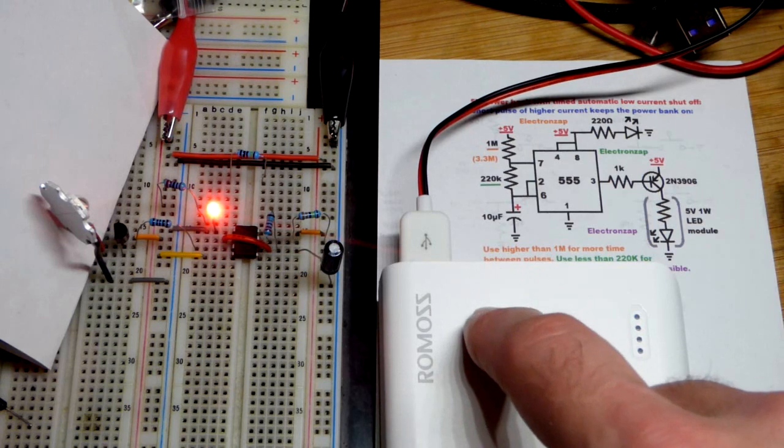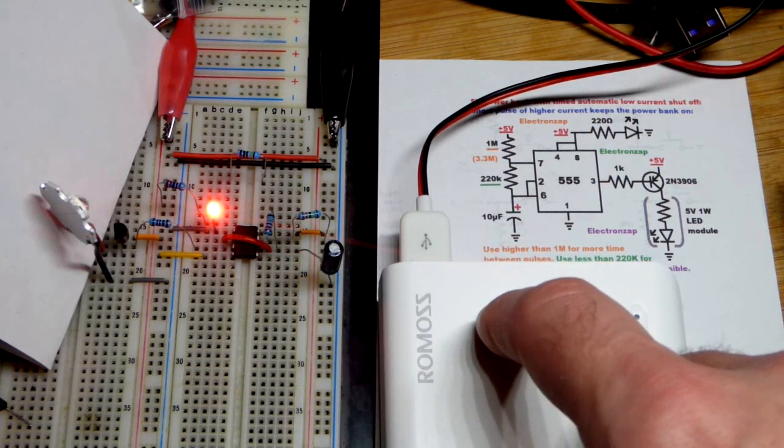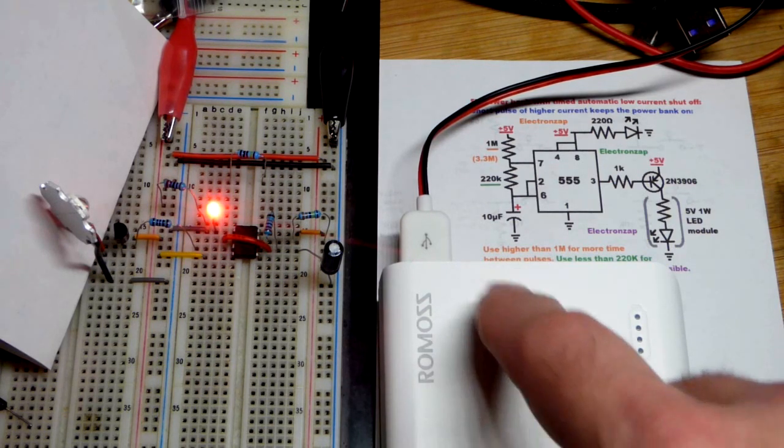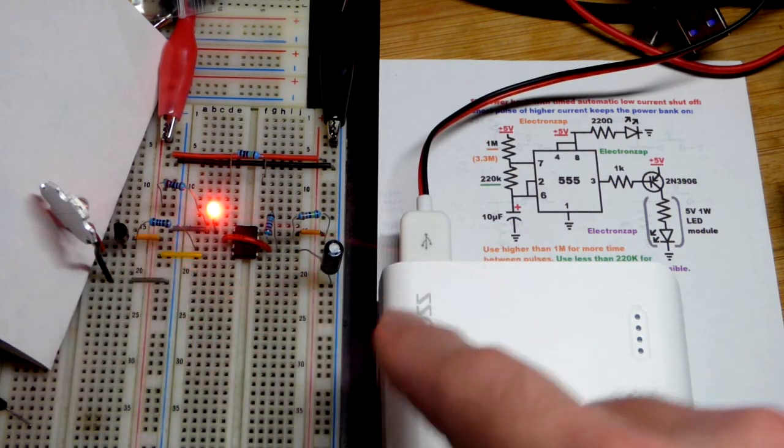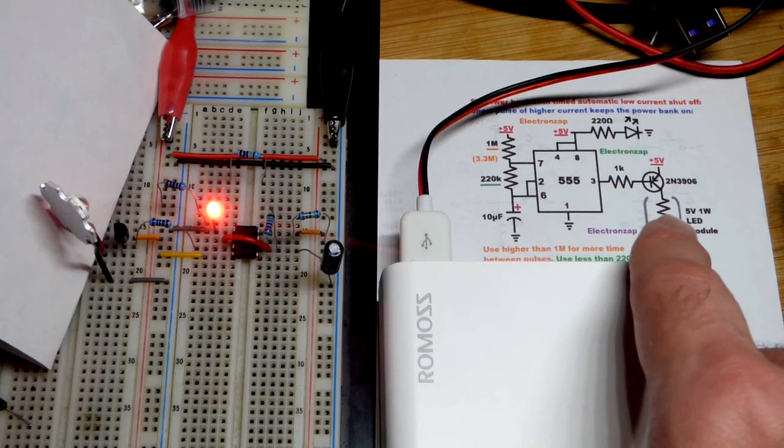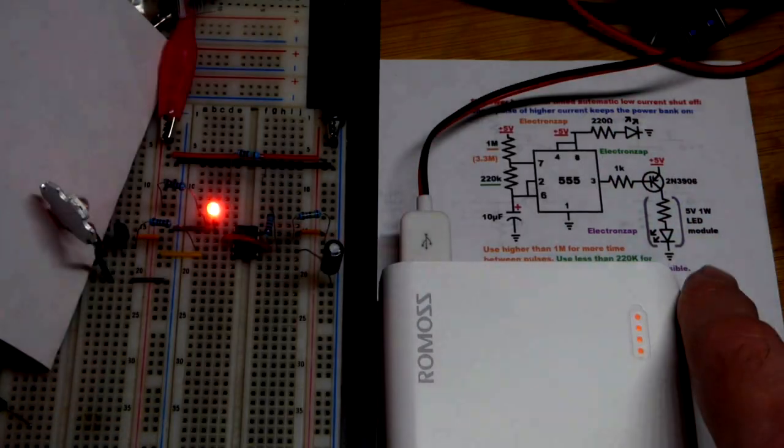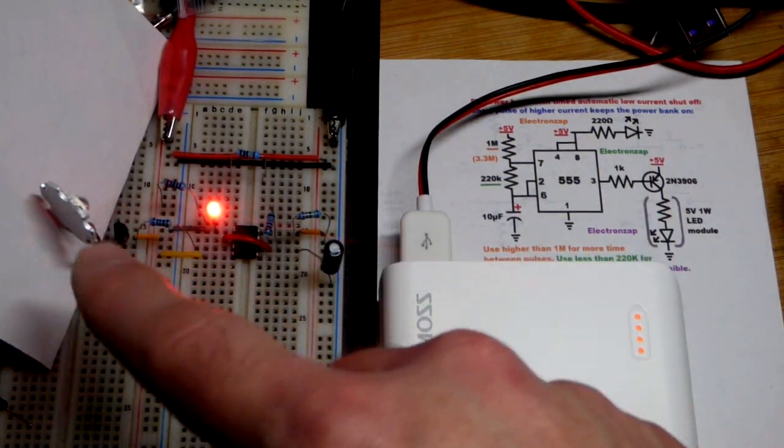If you don't have enough current being provided by these units, they automatically shut off. This one seems to stay on longer than other ones, for like a minute. So I have the timing of the flash of this LED pretty slow right there.